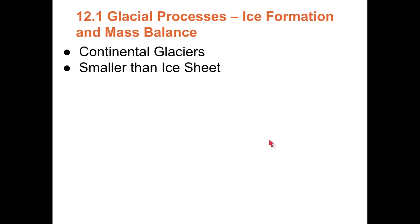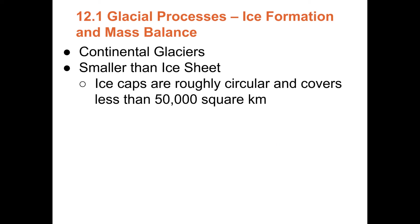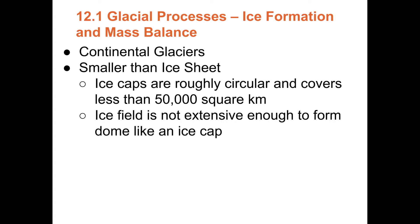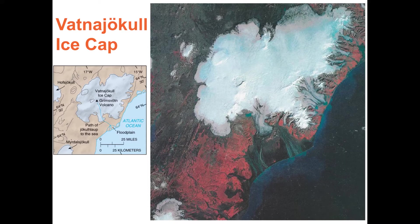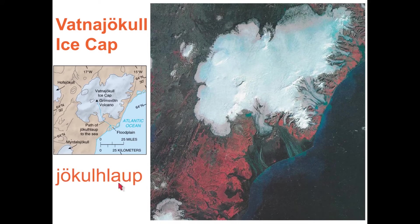There are other continental glaciers smaller than an ice sheet. Ice caps are circular and cover less than 50,000 square miles. Smaller than an ice cap is an ice field, not extensive enough to form a dome. The Vatnajökull glacier is one of the largest in Europe and is famous because there's a volcano underneath it. Back in the 90s, the volcano erupted and melted ice underneath, forming a massive lake. There was then an outburst flood called a jökulhlaup — a glacial outburst flood — that flowed to the ocean.